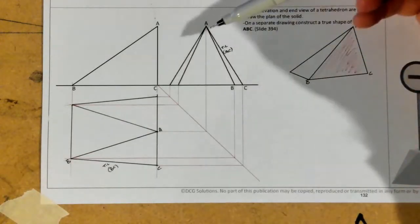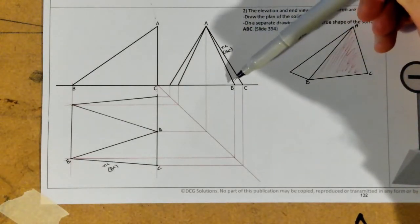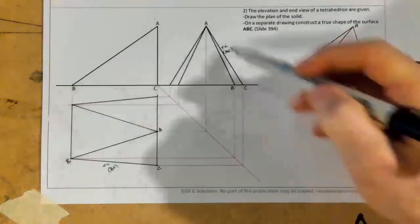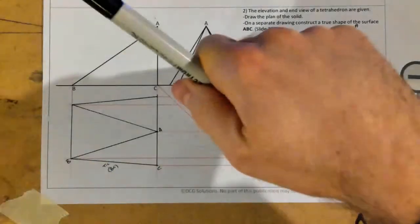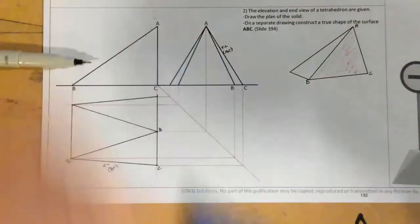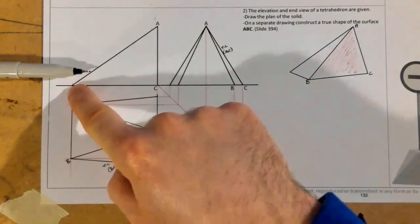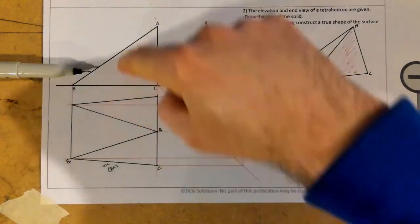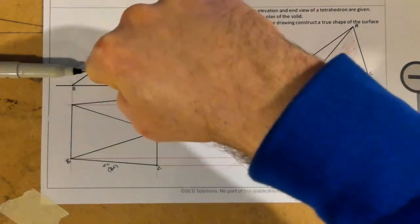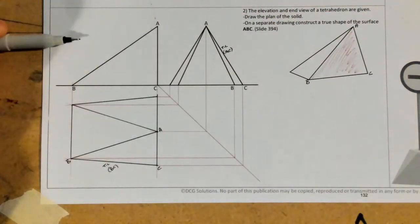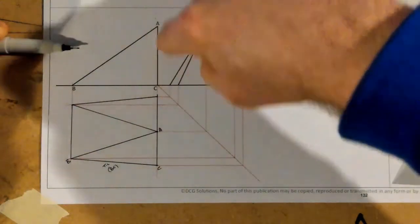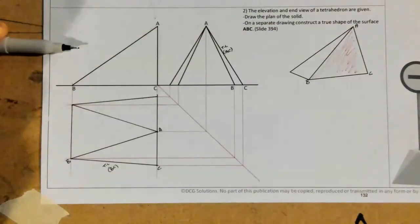Now, looking at that, A to B here, that can't be a true length because in this view, when I'm looking at this view here is when I'm looking at the object in this direction. And that can't be a true length because when I look at that line A, B there, it is not perpendicular to this direction. If it was perpendicular, it would be like the line A, C. But so that can't be a true length over here.